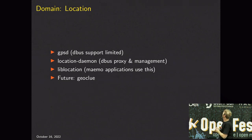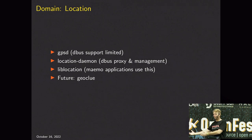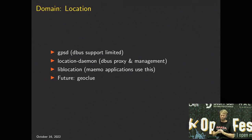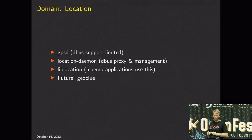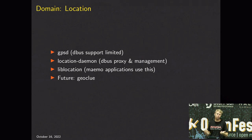The location domain: if you want to know where you are and use GPS, we use GPSD - the standard interface to GPS devices, an abstraction layer around the various ways to talk with GPS applications. Our own projects are Location Daemon, which provides a better D-Bus interface to location and is more Maemo-aware, and liblocation, a library applications can use to say 'I actually want to use GPS, please turn GPS on.' In the future, we will probably use Geoclue, which does clever things like approximating your location based on your IP address.